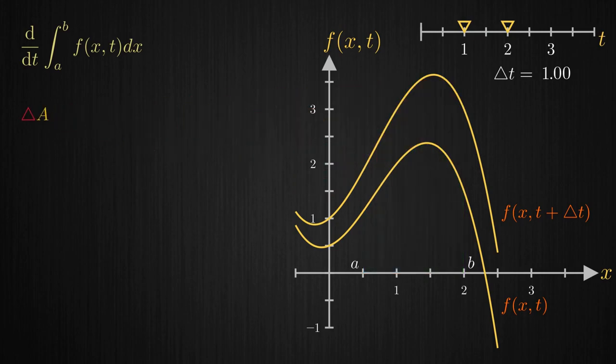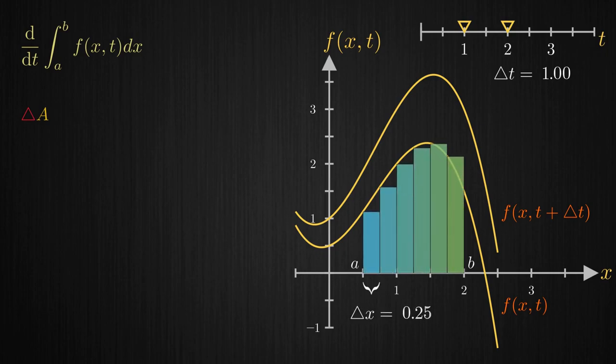If we approximate area under the curve f(x,t) with rectangles of equal width touching the curve and sitting in between the integral limits, the aggregate of change in area of each of these rectangles is an approximation to the actual change in area.